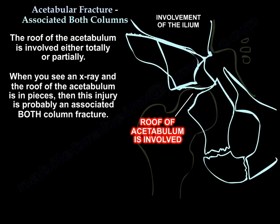The roof of the acetabulum is involved totally or partially. When you see an X-ray and the roof of the acetabulum is in pieces, then this injury is probably an associated both column fracture.